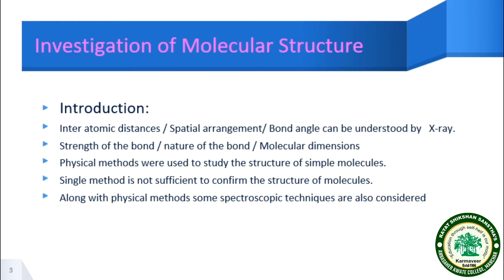We also study in molecular structure the bond angle, which can be understood by X-ray technique. The second is the strength of bond — whether the bond is stronger or weaker. Nature of the bond means whether the bond is covalent, polar, ionic, or partially polar. Similarly, molecular dimensions can be understood — meaning the size of the molecule, how small or how big the molecule may be. That can be very easily understood by molecular structure.